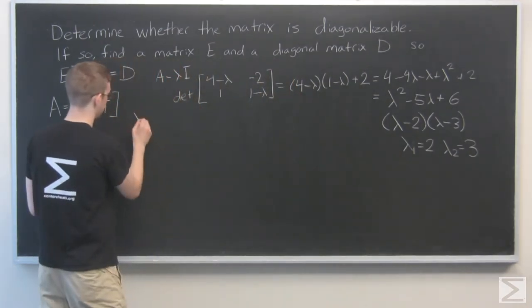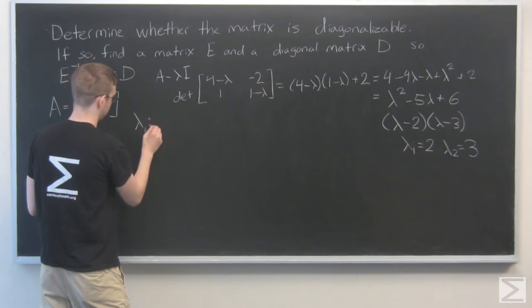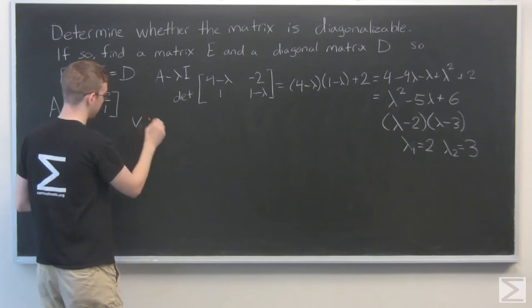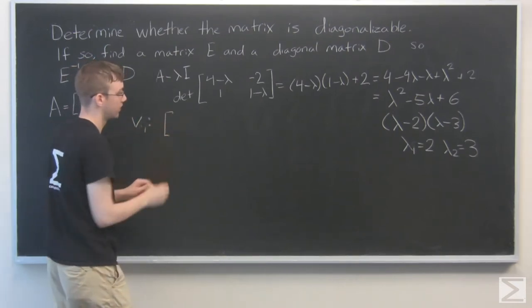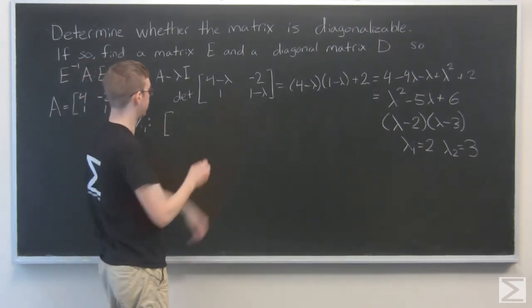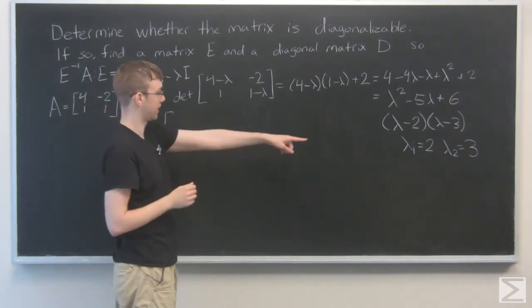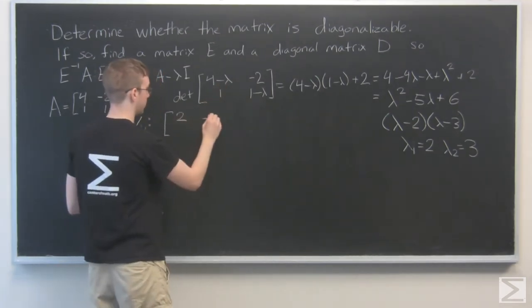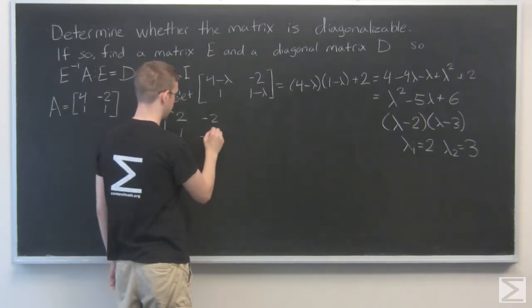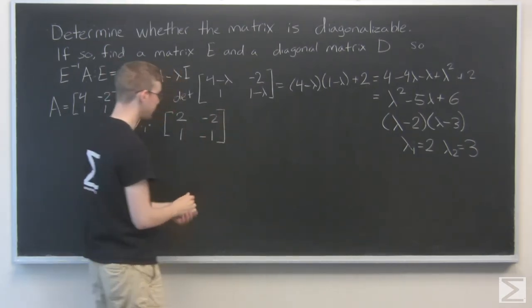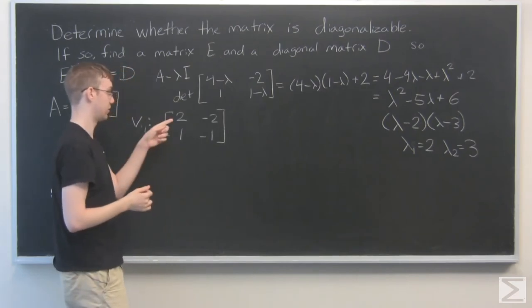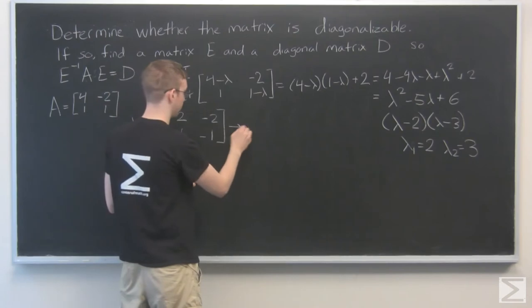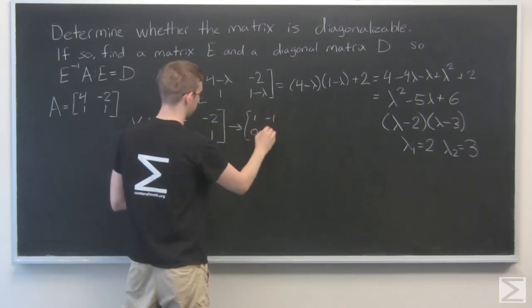We'll start with lambda 1, finding vector 1 really, so I'll write V1. We plug in lambda 1 for the lambdas here. So I'm going to have 2 equal to lambda, so 4 minus 2 is 2, negative 2, 1. 1 minus 2 is minus 1.